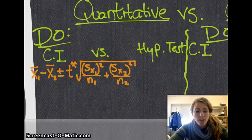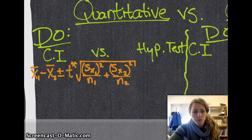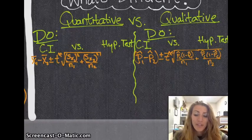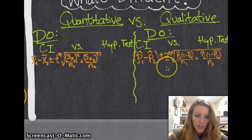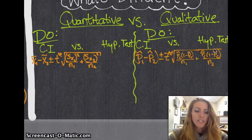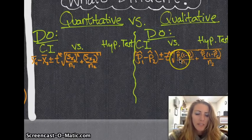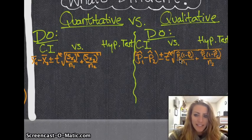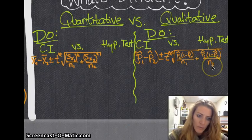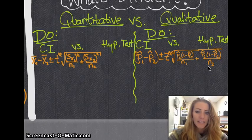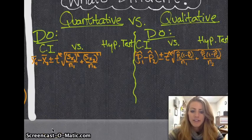For proportion confidence interval, same thing, except you have p hat 1 minus p hat 2 plus or minus z star, and then the standard deviation of proportions. So if it's qualitative data, your confidence interval is p hat 1 minus p hat 2 plus or minus your z star, which you get from whatever your confidence level is, times the standard deviation of the statistic. And in this case, our statistic standard deviation is p hat c times 1 minus p hat c all over n1 plus p hat c times 1 minus p hat c over n2, where p hat c is the combined proportions with the two samples. So you combine the two proportions together.